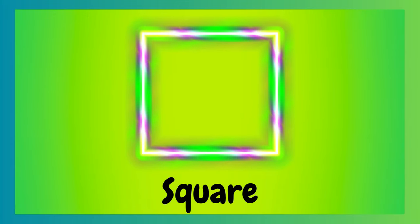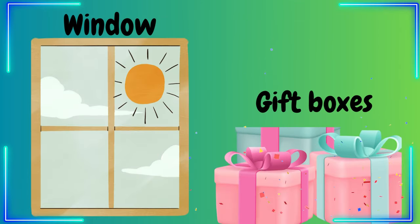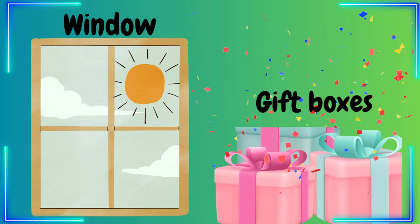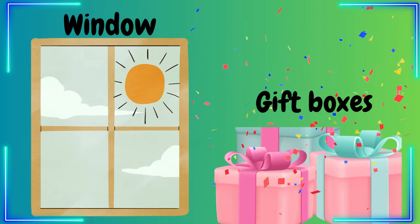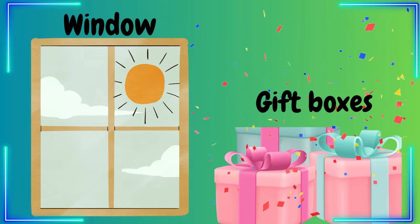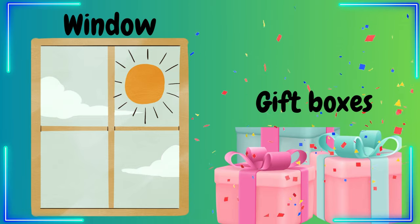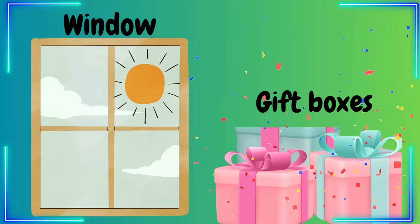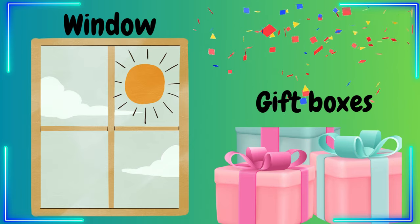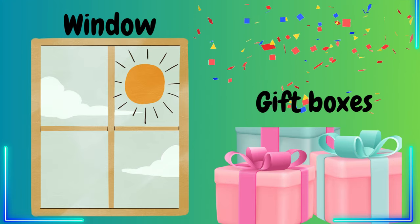This is a square. It's flat. It has four equal sides and four points. Let's look at some examples of a square. Do you see what I see? That's right, it's a window. Is your window the shape of a square? And then we have gift boxes. You can take a regular box and turn it into something beautiful and give it to someone. These boxes are the shape of a square.